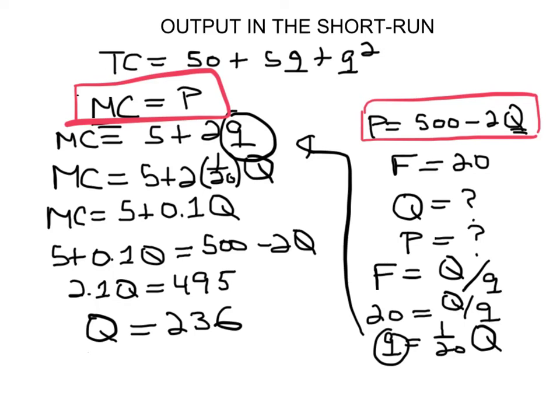So at the market level, when all the firms are added up, when the output of all the firms is added up, the whole market produces 236. And I can find out what each firm produces by taking this, using the equation I have here. So this would be 1 over 20 times 236. So that's going to be equal to about 12.